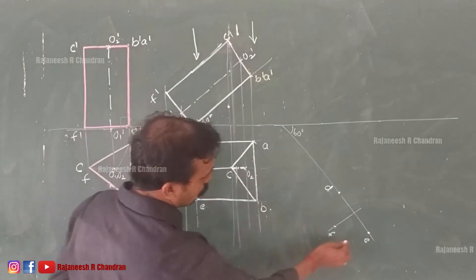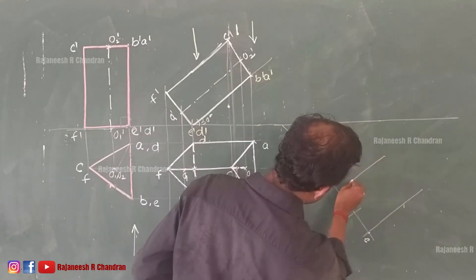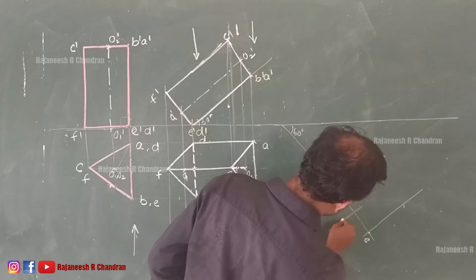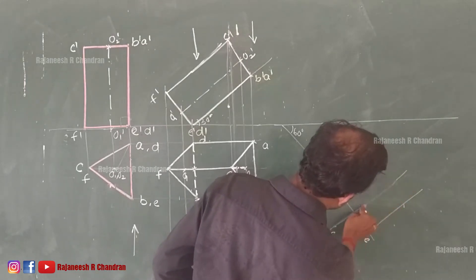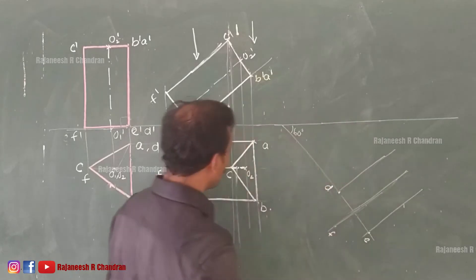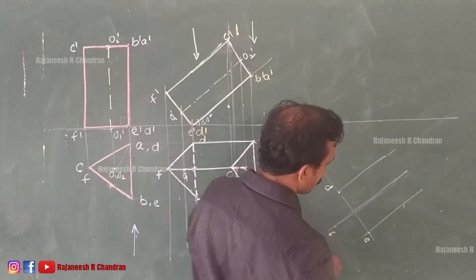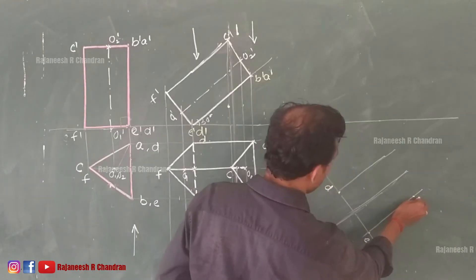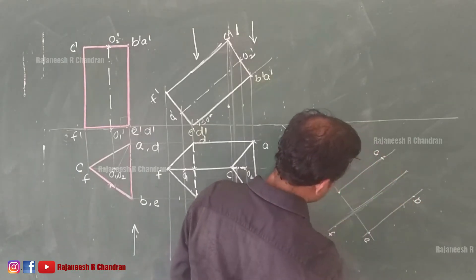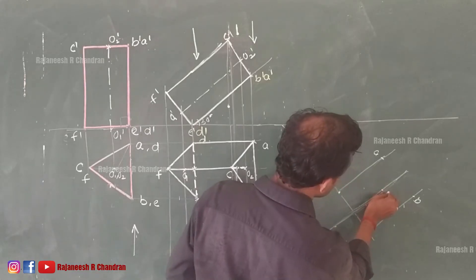Now through every point — through E, through D, and through F — draw perpendicular lines. So this will be our B, this will be our A, and this will be our C.